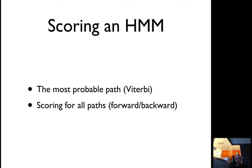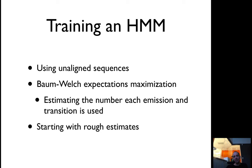You have basically two ways to score it. You can find the most probable path, which would be Viterbi, or score for all possible paths and use the forward-backward algorithm. You can train the Hidden Markov Model using aligned sequences. When you start alignment, you have to keep iterating it. It's called Baum-Welch expectation maximization. You estimate the number of emissions here and often you need to store some kind of rough estimates.